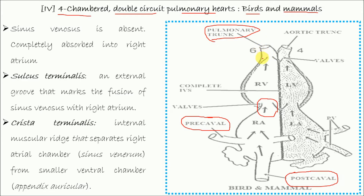The pulmonary trunk is a modification of the 6th aortic arch and has a valve. The left atrium receives oxygenated blood from the lungs through pulmonary veins. The left atrium opens into the left ventricle through the left atrioventricular aperture, guarded by the bicuspid valve. The left ventricle continues as the aortic trunk, which is a modification of the 4th aortic arch.